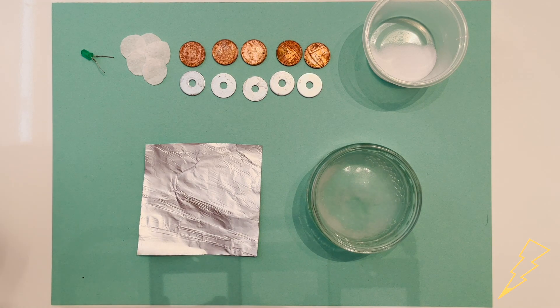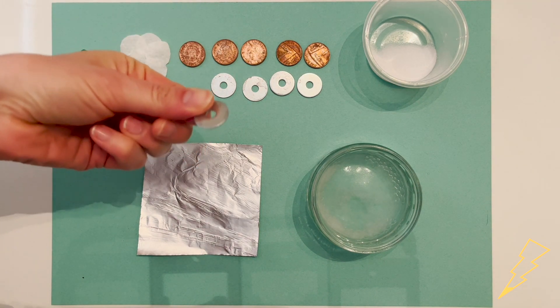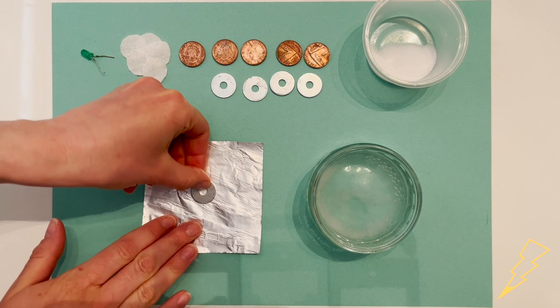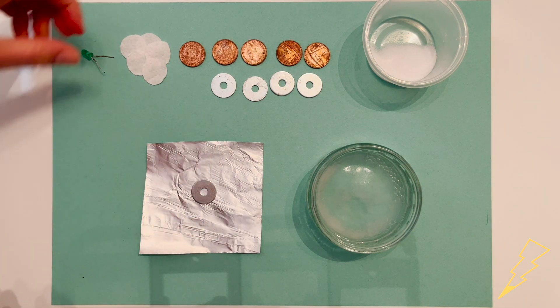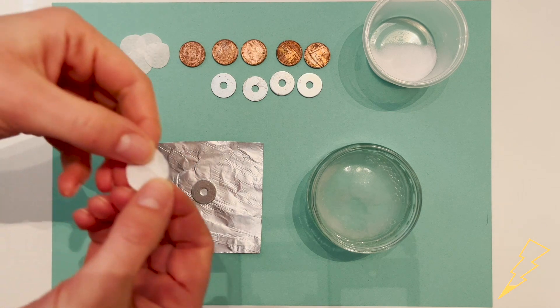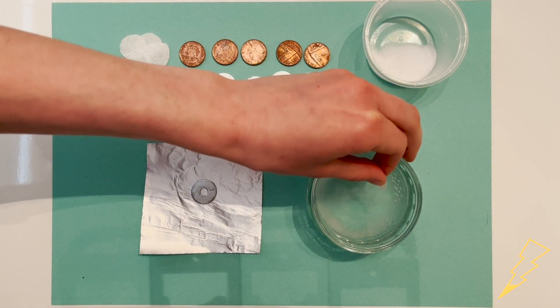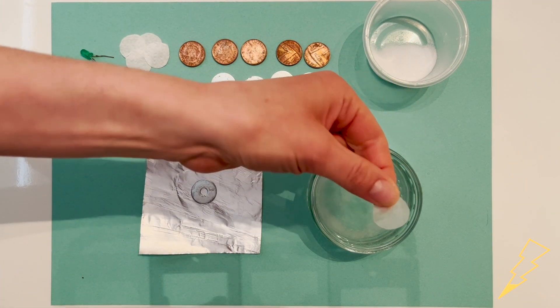Now we can start building our battery. I'm going to start by putting one of the zinc washers on the bottom of the pile. Then I'm going to take one of my paper circles, dip it gently in the salt water so it's only just wet...